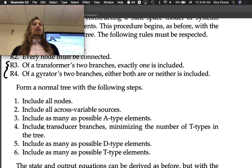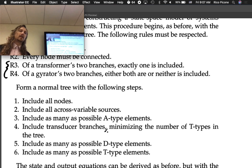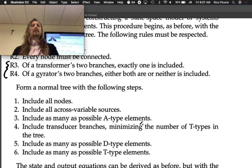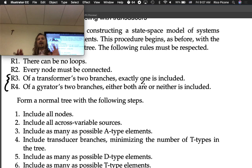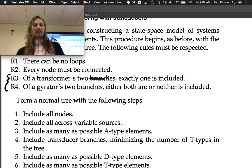Four: Include transducer branches, minimizing the number of T-types in the tree. This is a tricky rule to follow because you don't know at this point how many T-types you're going to have in the tree. That doesn't come until step six. You have to choose one configuration. If you only have one transducer in your system, then you have two options. If it's a transformer, you have to choose one... I use this terminology again. I shouldn't use this. This should be edge, edges.